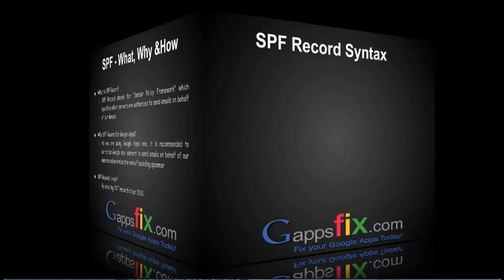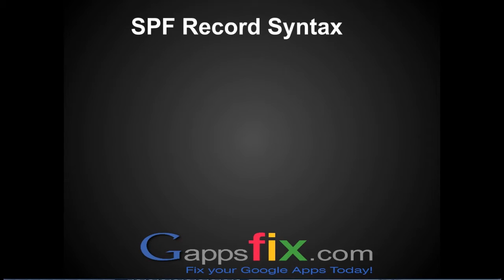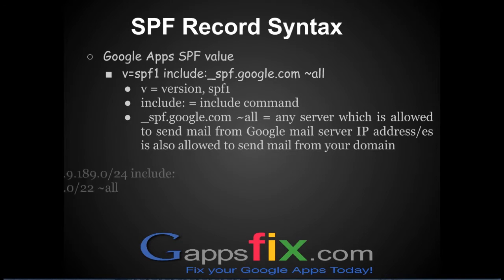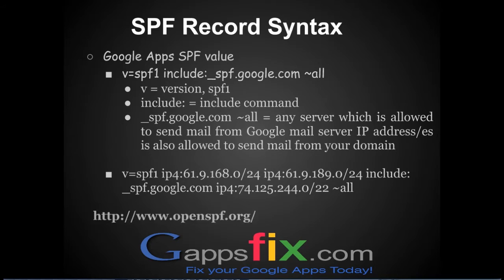What is the syntax of an SPF record? In this video we will be explaining the Google Apps SPF value. It is recommended you visit openspf.org to learn more. For Google Apps, the SPF record value would be: v=spf1 include:spf.google.com ~all. Let's break that down — 'v' stands for version, so version SPF1.